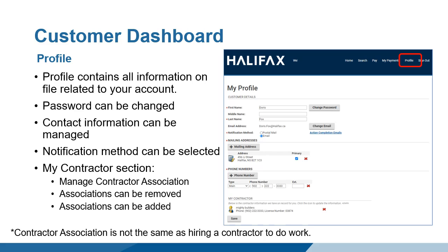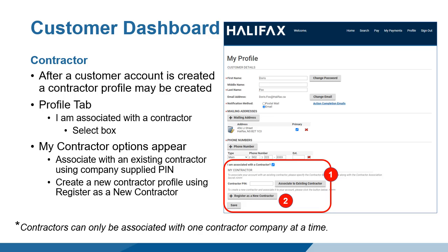At the bottom of the window is the My Contractor section. All contractors must first have a customer account. The My Contractor section of the customer account is where those who work as contractors can create and manage their contractor profile. All contractors must be registered with a contractor profile before they can be listed as a contractor on a permit.